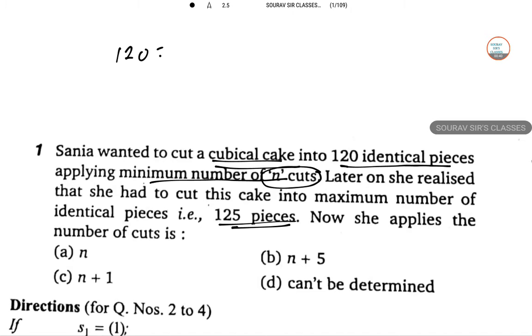So now 120 is 4 into 5 into 6. Since the minimum number of cuts are possible only when all the three factors are very close. So three factors that are very close are here 5, 5 and 5. So that is 125.